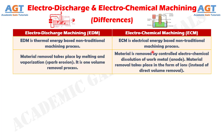Difference No. 2: In Electro-Discharge Machining, material removal takes place by melting and vaporization, or spark erosion — it is a volume removal process. Whereas in Electro-Chemical Machining, material is removed by controlled electro-chemical dissolution of the work metal anode. Material removal takes place in the form of ions, instead of direct volume removal.